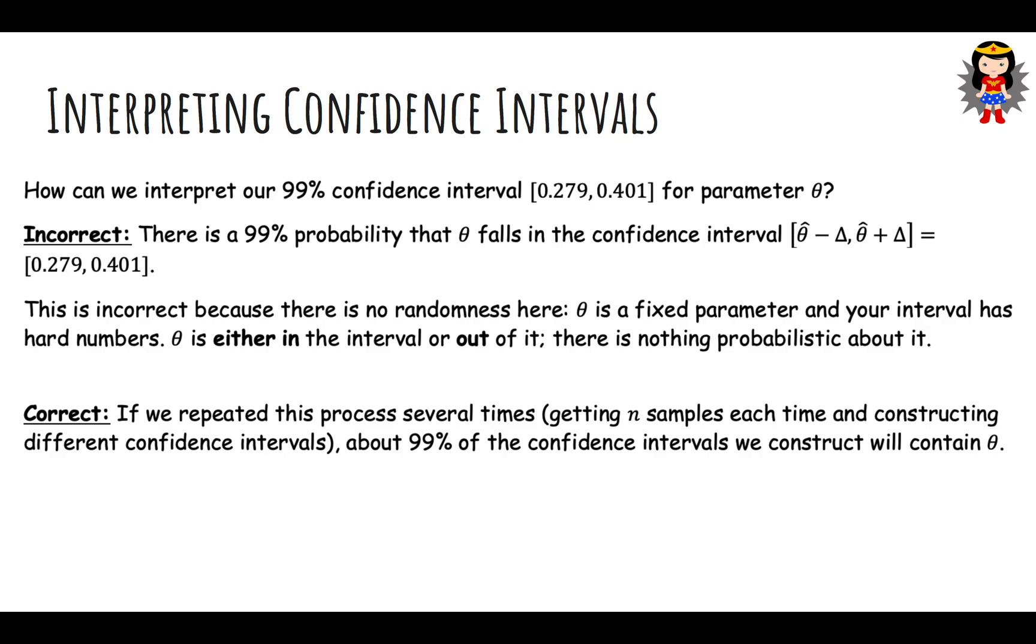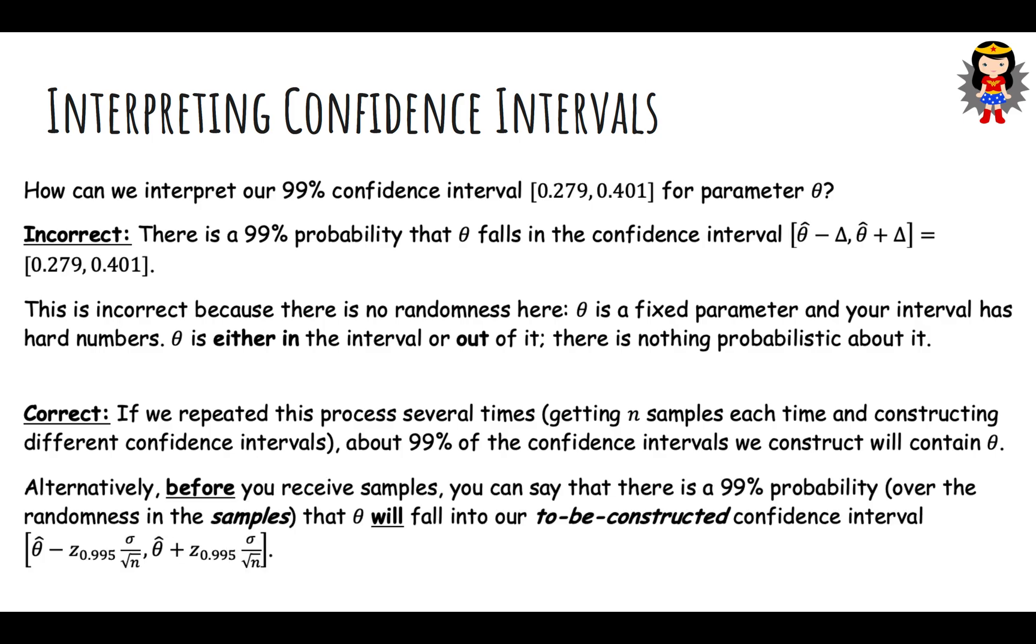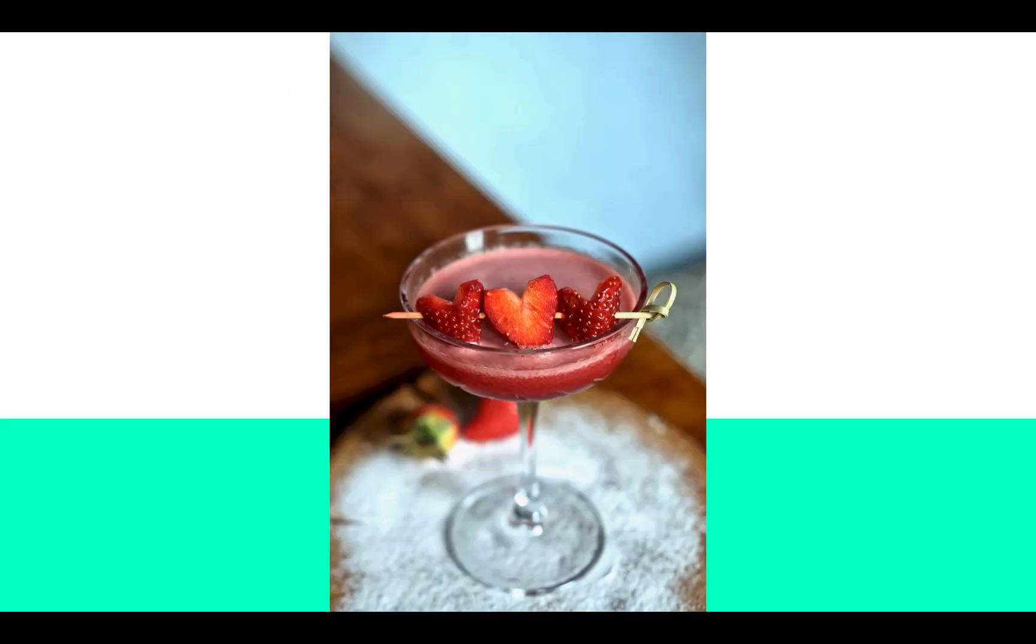The correct way is to say if we repeated this process several times, getting n samples each time and constructing different confidence intervals - remember, if I flip 400 times and another 400 times and another 400, each time I construct a confidence interval, they're going to be different because I'm not always going to get 136 heads - then 99% of these intervals I create will contain theta. Alternatively, before you receive the samples, you can say there's a 99% probability that theta will fall into our to-be-constructed confidence interval. But once you plug in the numbers and get the samples, you cannot say that. That's a very subtle difference there. Thanks.